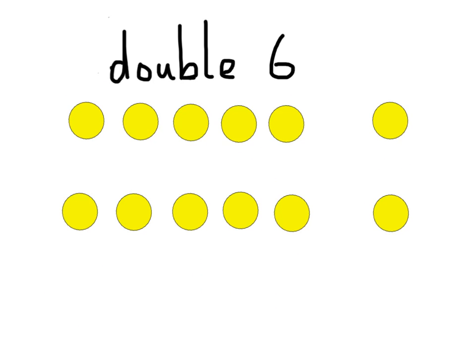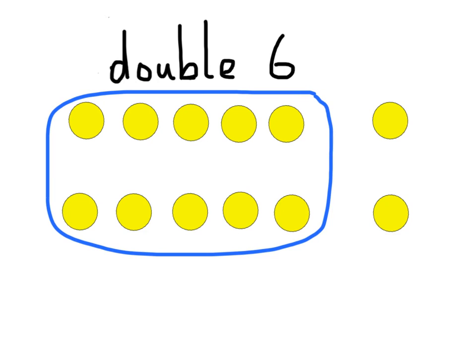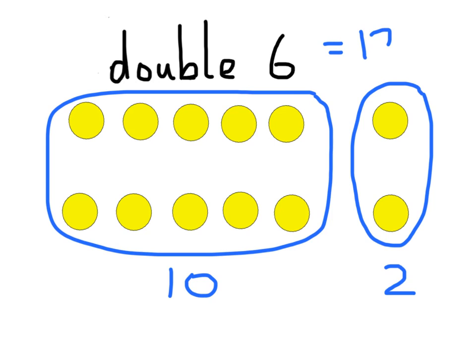When the numbers get a little bit larger, numbers like double 6, the way to see that is if you double 5, that will give you 10. And if you double the other 1 out of each 5, that will give you another 2. So double 6 is like doing 10 and 2, which equals 12.